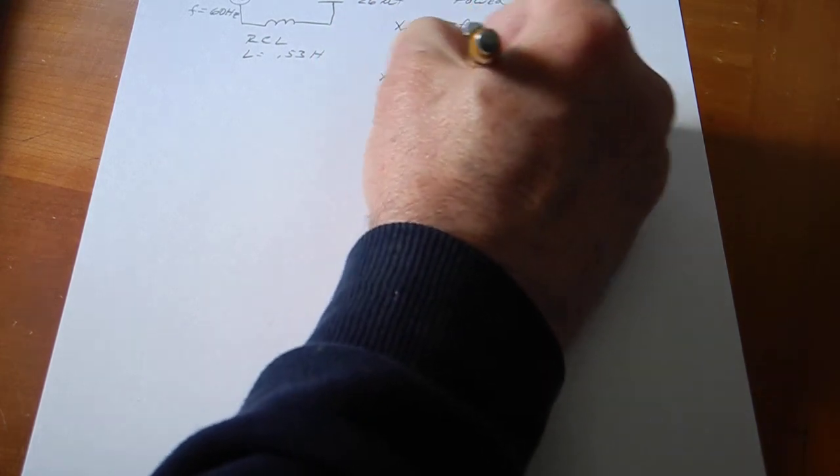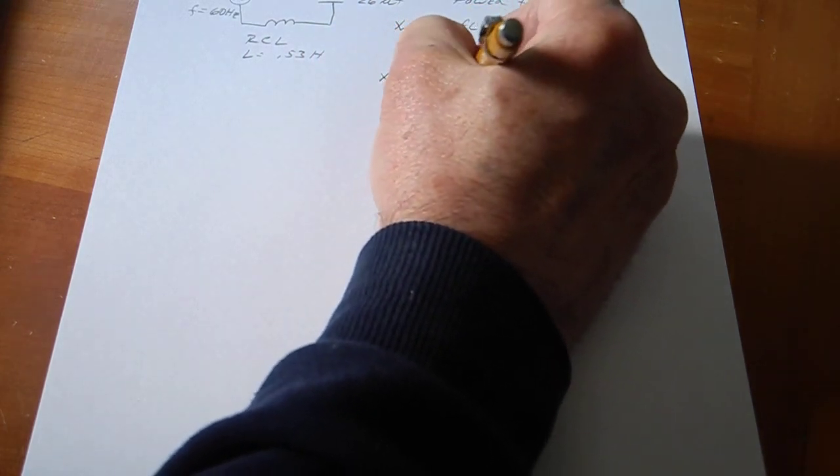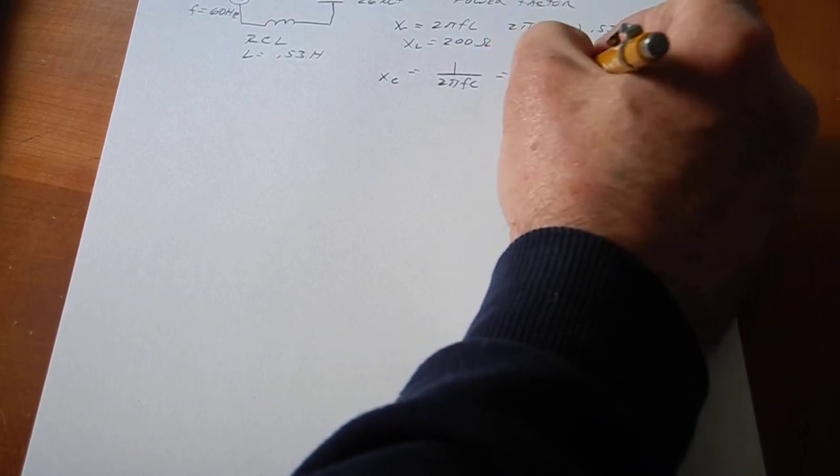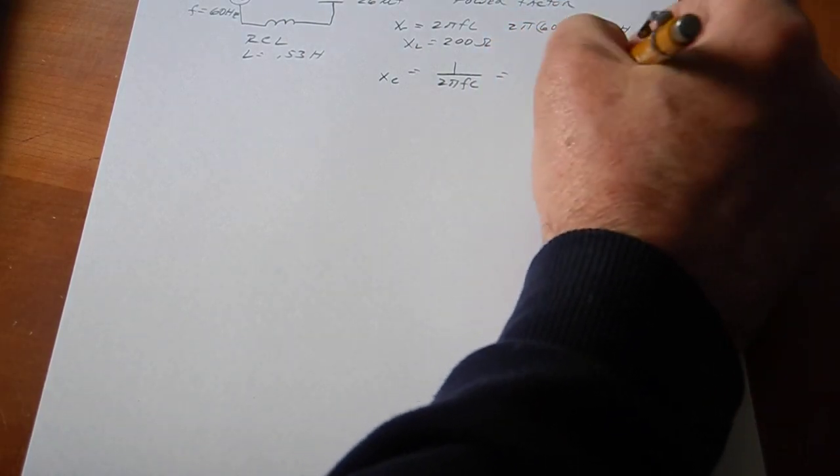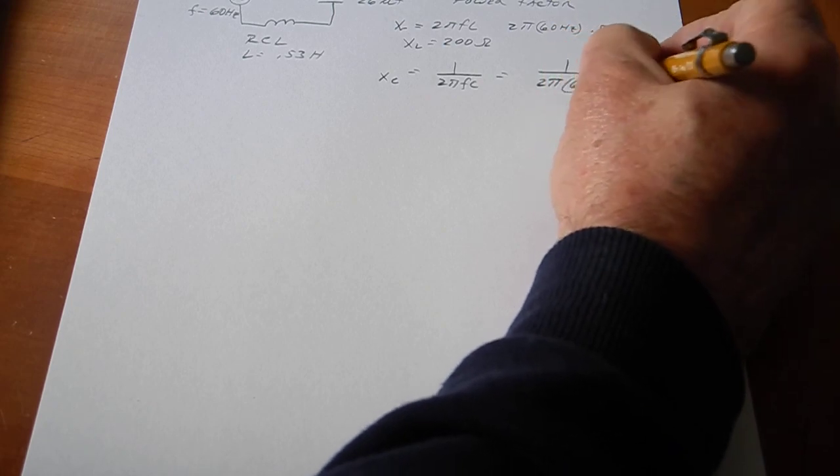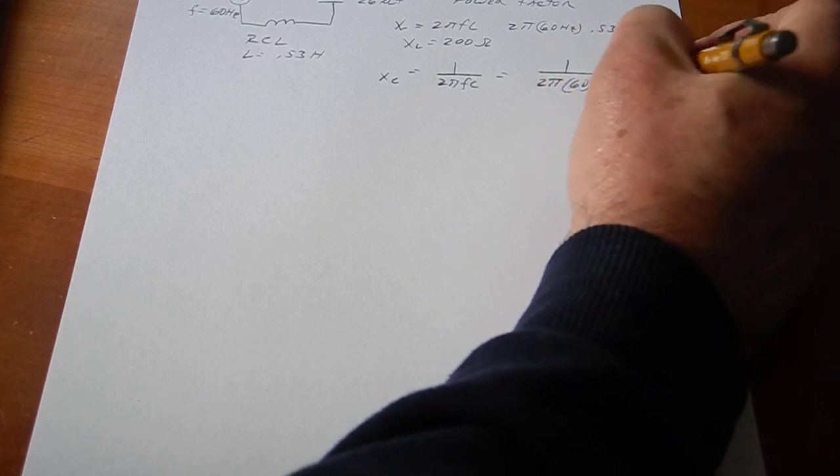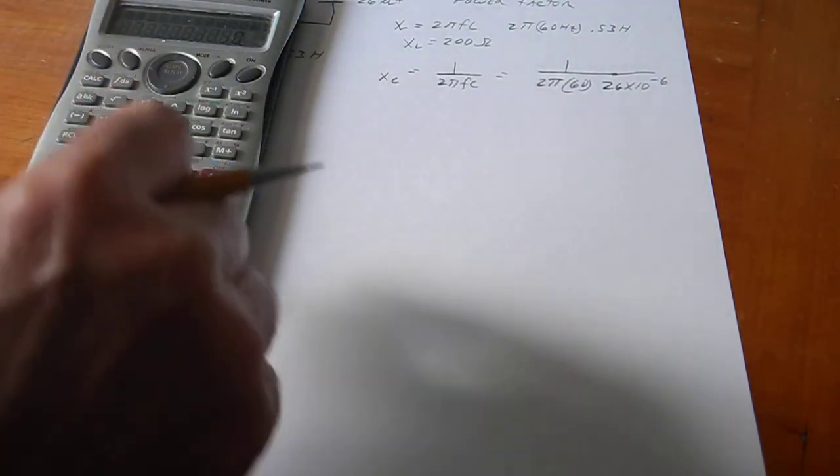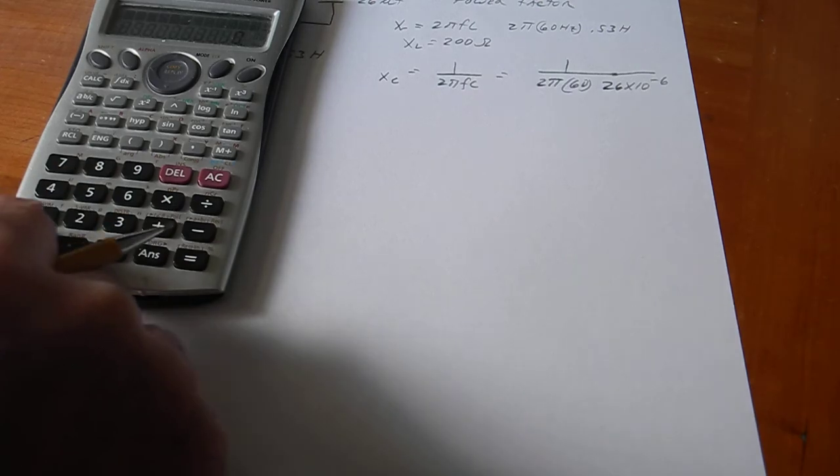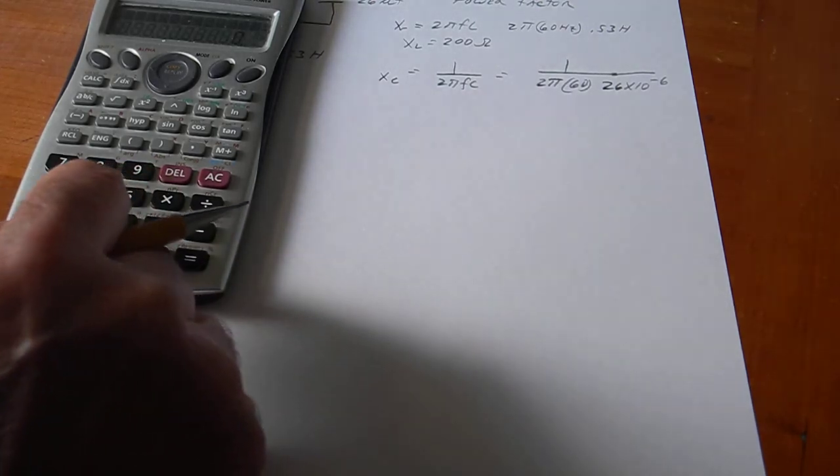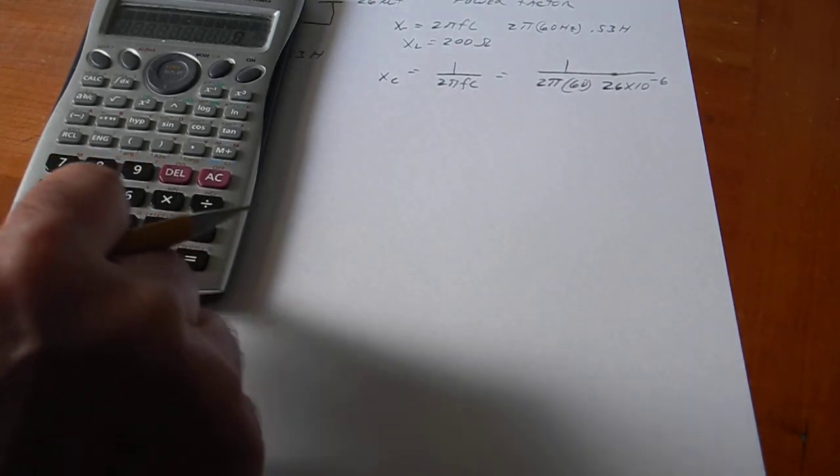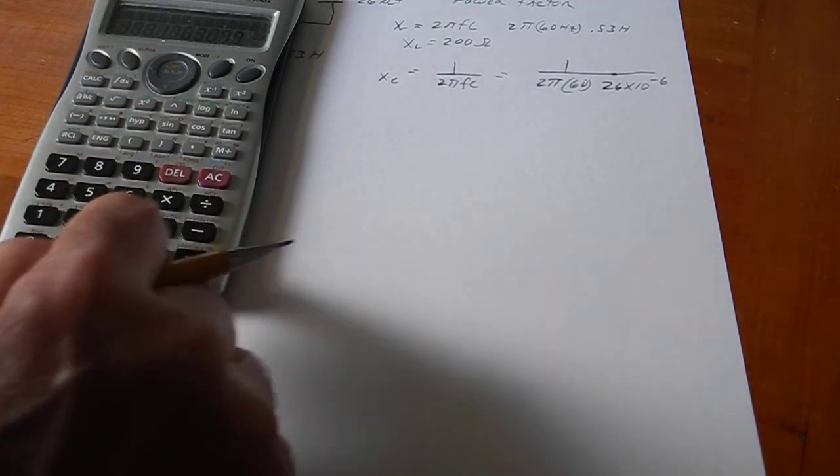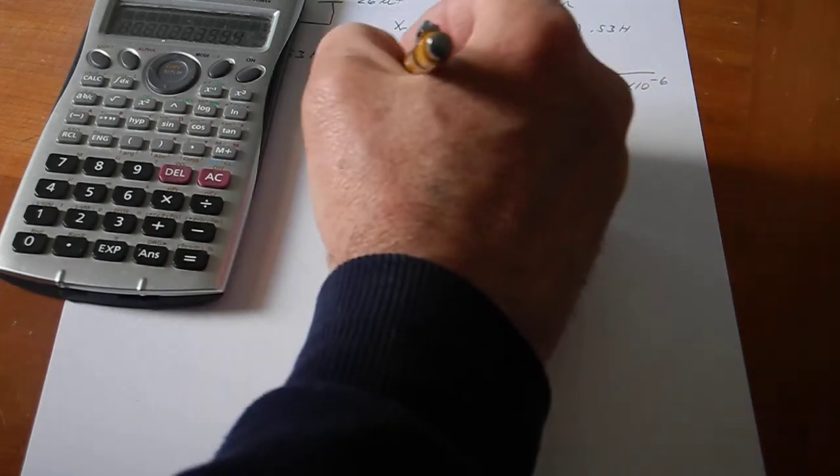X of C is 1 over 2 pi F C. So, that's 1 over 2 pi. F is 60. And C is 26 microfarads, that's 26 times 10 to the minus sixth. So, we'll do that. So, 2 times pi times 60 times 26 times 10 to the minus 6, take the reciprocal, and that gives you 102 ohms.